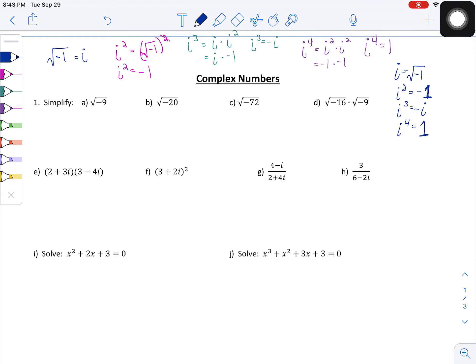So it's kind of an interesting cycle that happens. I've oftentimes referred to it as the i cycle because it just keeps literally cycling through those four values, i, negative one, negative i, positive one.